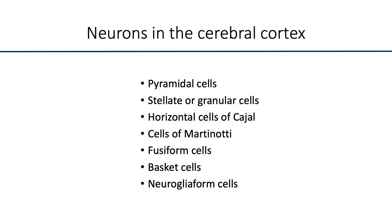There are many types of neurons in the cerebral cortex. They include the pyramidal cells, which are the main source of efferent fibers; stellate or granular cells, which are the main cells receiving afferents; along with horizontal cells of Cajal, cells of Martinotti, fusiform cells, basket cells, and neuroglioform cells.